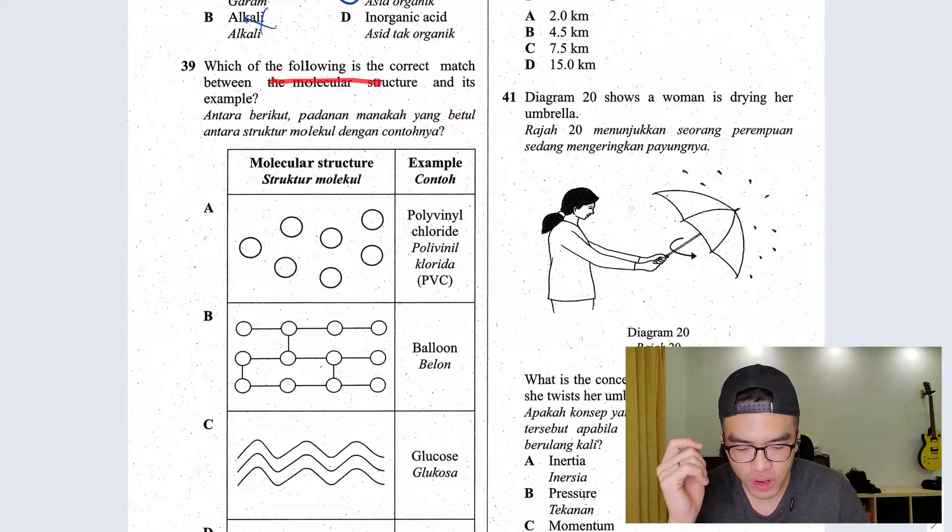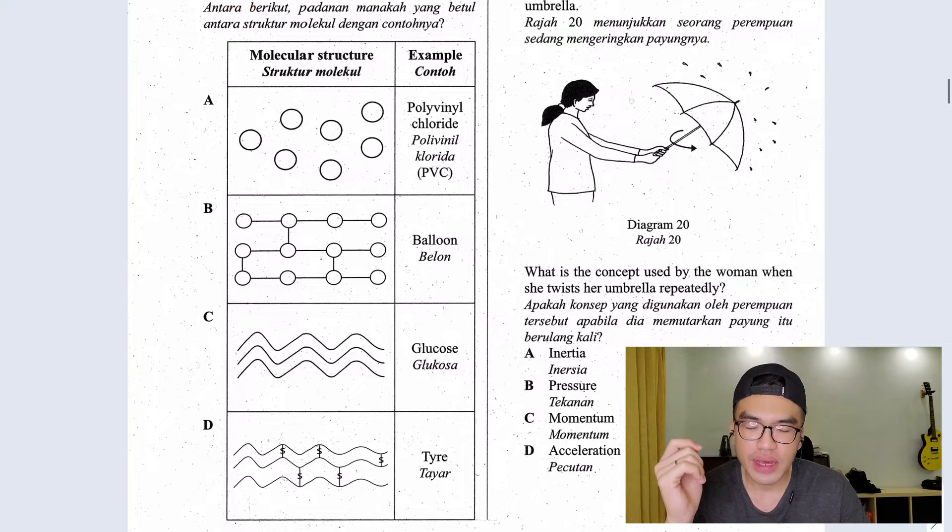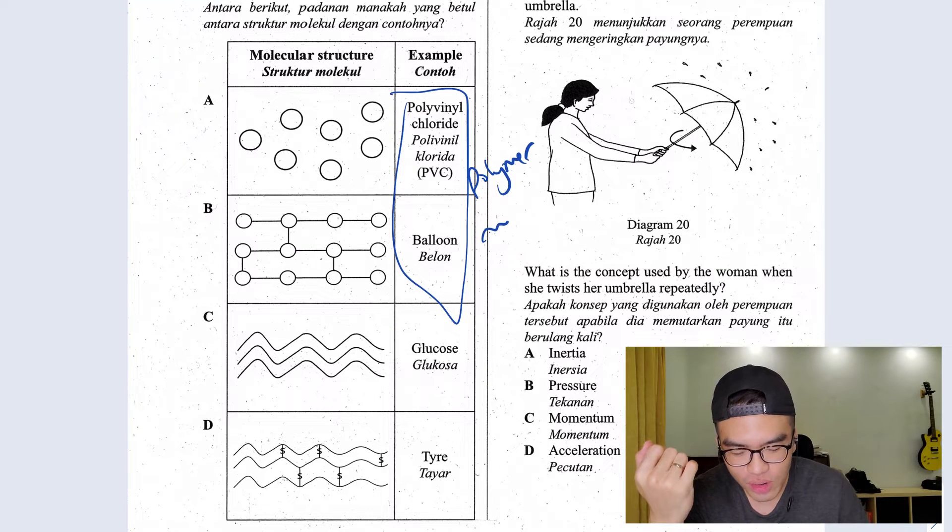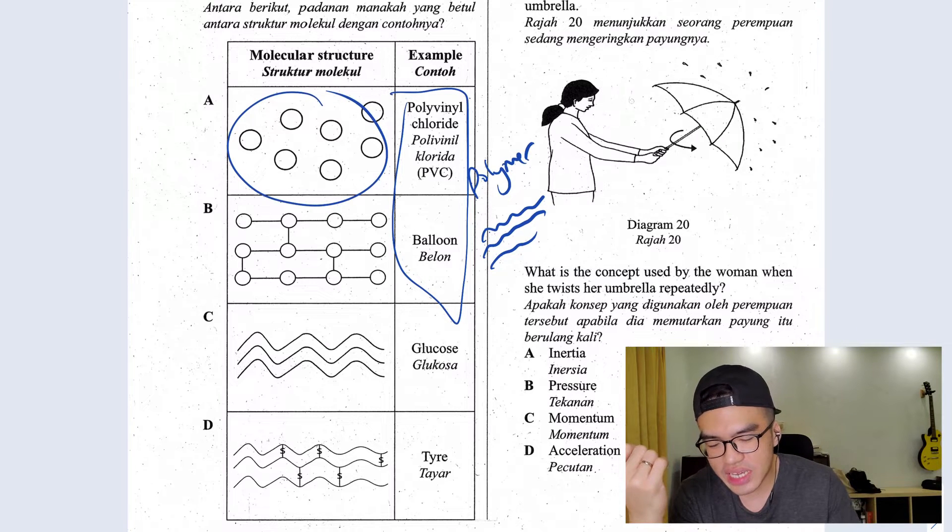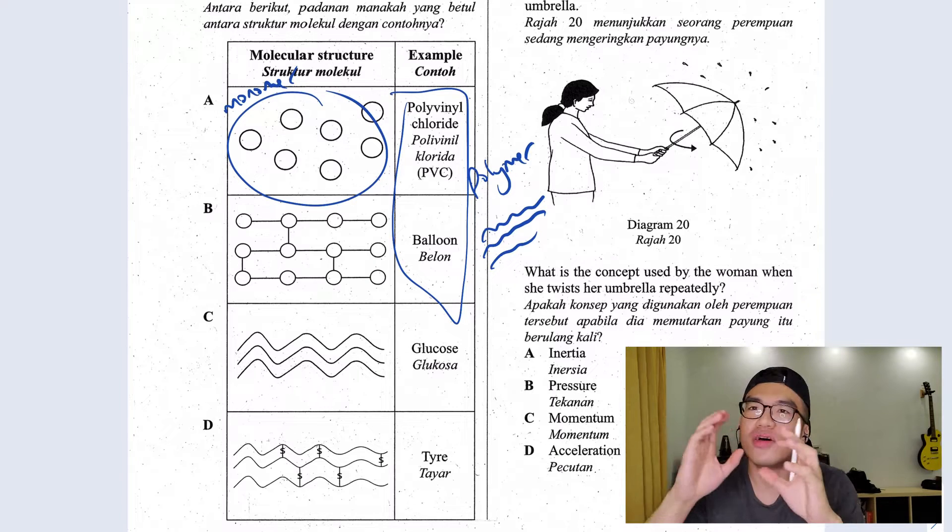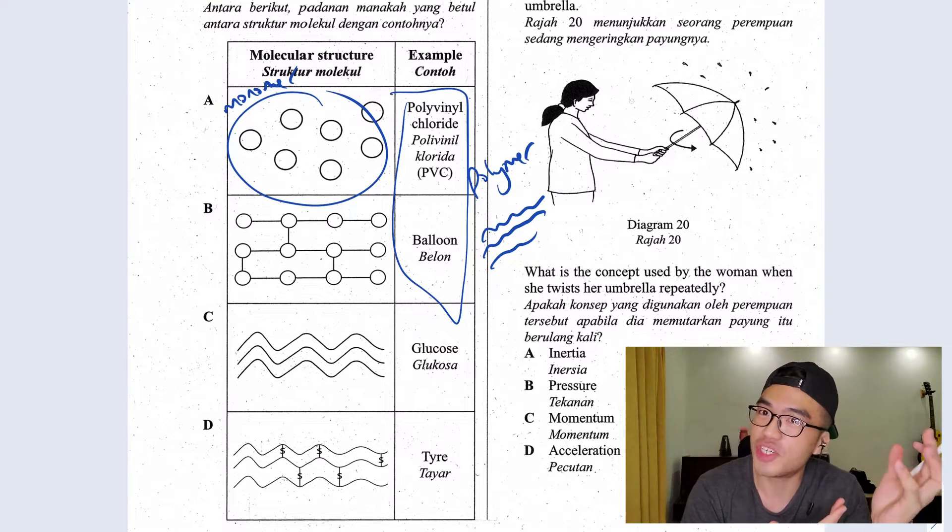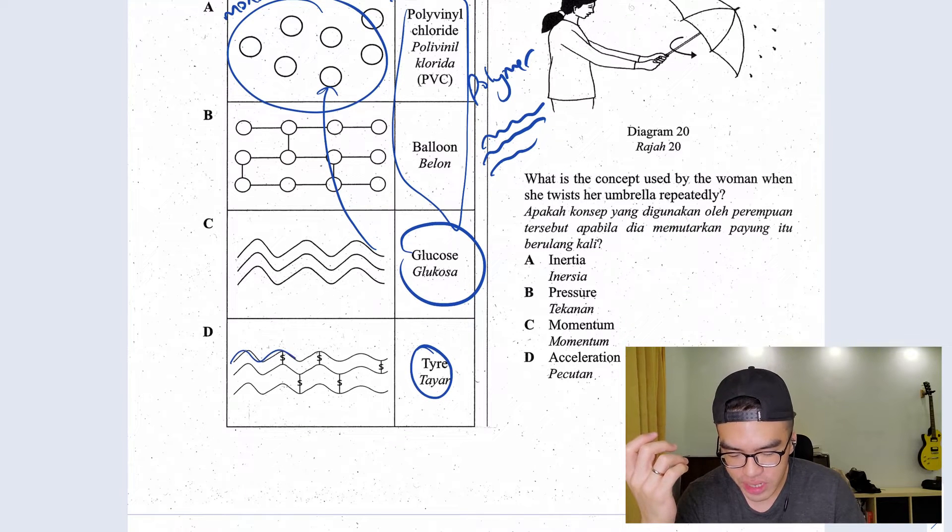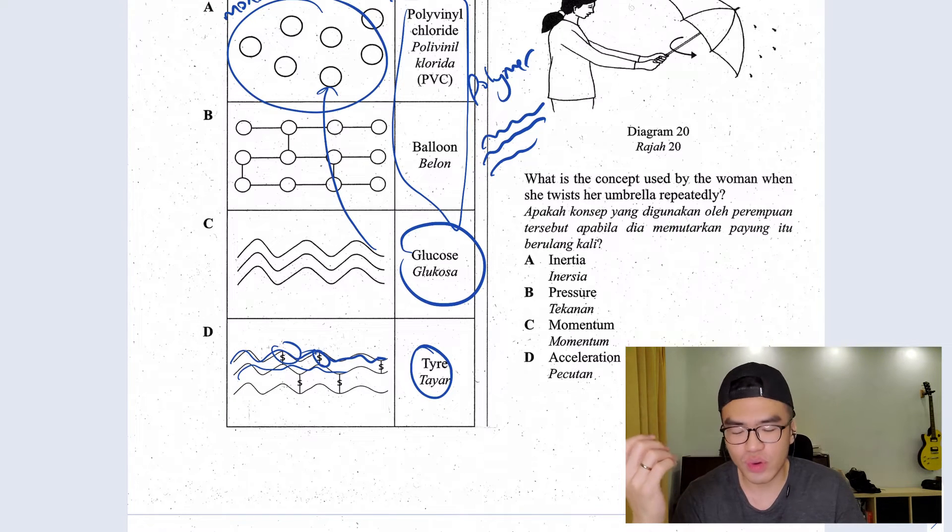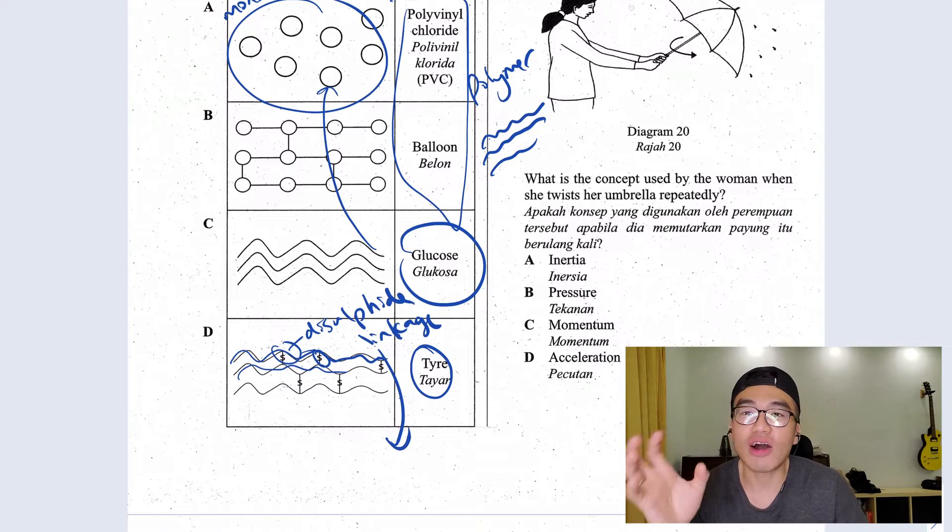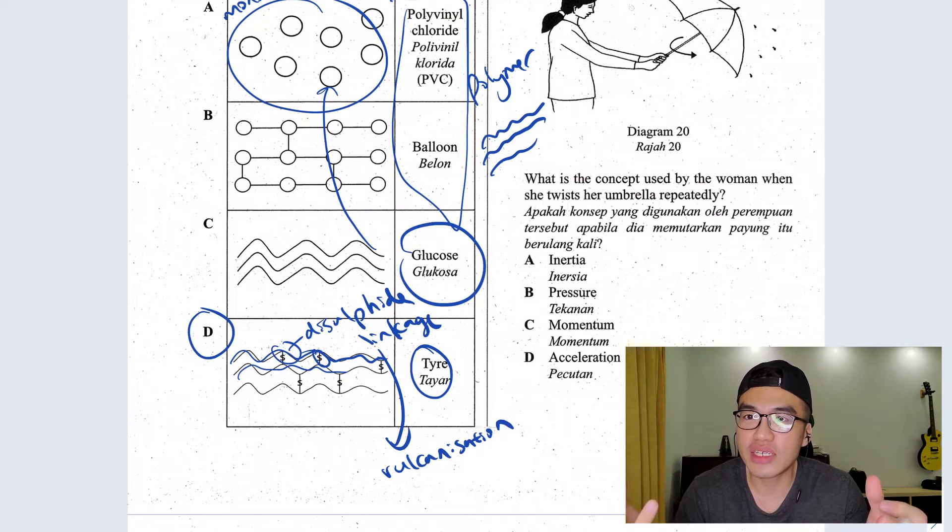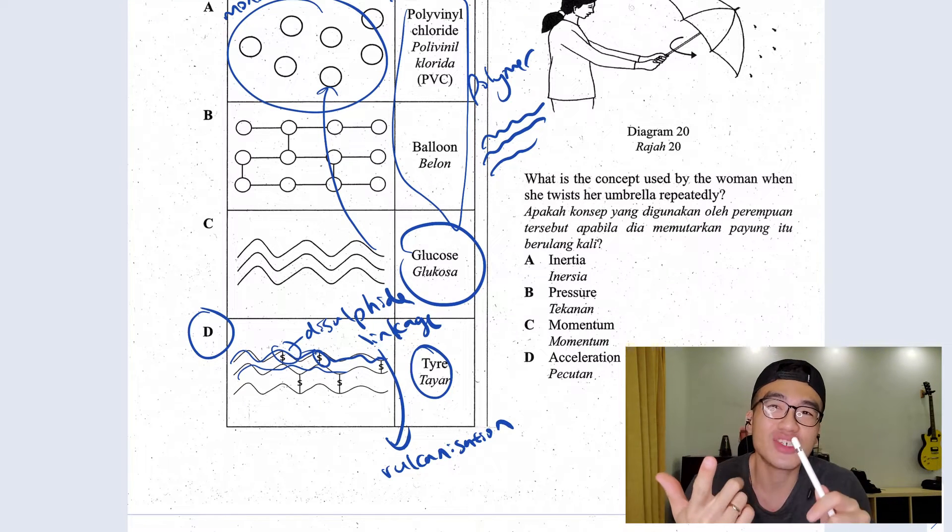Question 39, which of the following is the correct match between the molecular structure and its example? As you can see here, we have PVC and balloon. Balloon is made from rubber. Rubber is a polymer. We have two polymers here. So how do polymers look like? They look like strands. This here is a monomer. Quick revision, what is a polymer? When you have a group of monomer linking together, you get a polymer chain. So glucose here is a monomer. Tire would be the correct here because as you can see, you have polymer chains here. And what is this S here? This is what we call the disulfide linkage. To add sulfur into your rubber, this is known as vulcanization. So definitely the answer is D. Quick revision, what is the function of vulcanization? It's to make your rubber stronger, has higher melting point and is more resistant to corrosion.